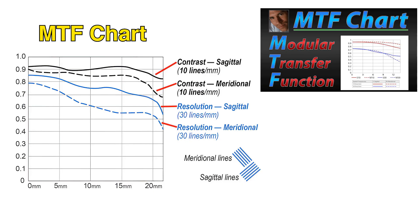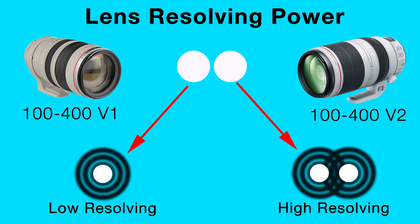Resolving power means that the lens can project an image with very, very fine detail. If you look at MTF charts, there's typically a micro contrast curve and then a second curve that usually deals with resolution. The short definition is that the resolving power of a lens is its ability to define two very, very small points next to each other as individual points. A low resolving lens would see them as a single point.